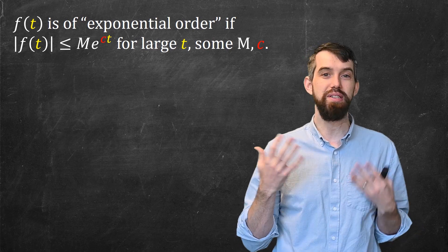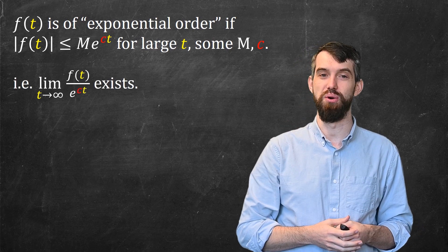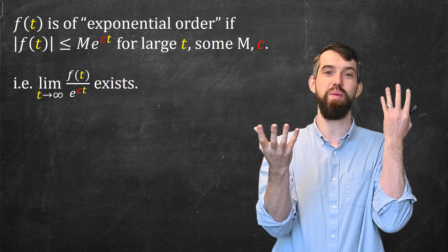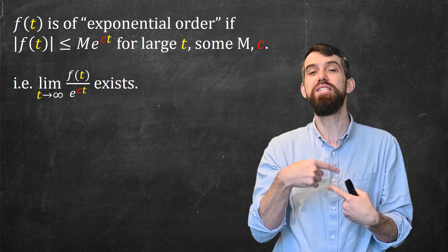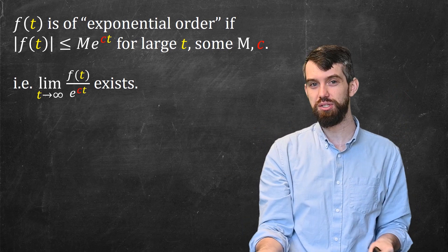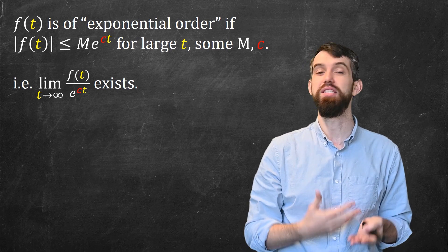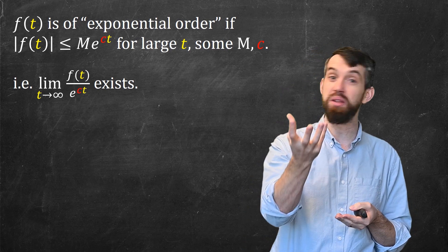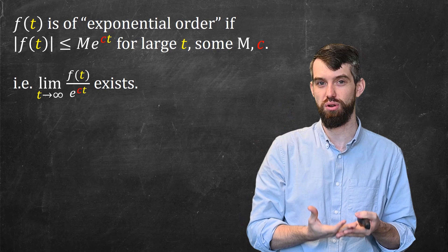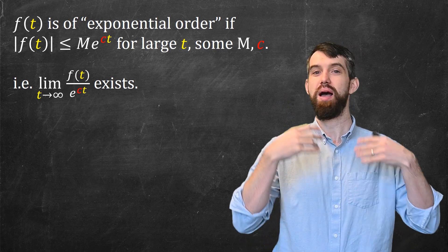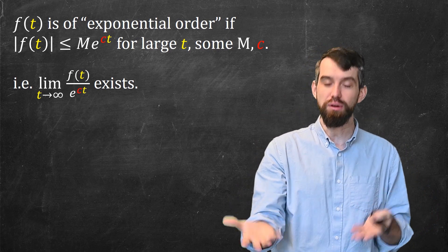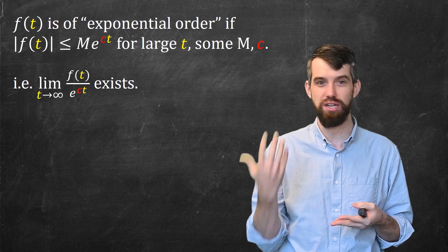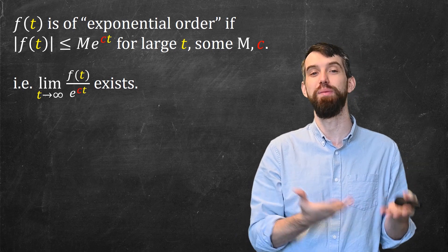There's a simple enough test for this, which is just take the limit. If you look at f(t) divided by this exponential, is this limit as t goes to infinity going to exist or not? For example, if f(t) is polynomial, so you have some polynomial of degree n on top and an exponential on the bottom, then by L'Hopital's rule, iteratively we've shown in the past that exponentials always dominate polynomials, and that limit would just be zero.